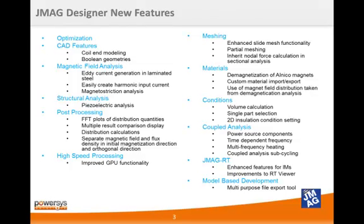For materials, JMeg has improved the database by adding the demagnetization characteristics of Alnico magnets, made it easier to import and export custom materials, and you can now apply magnetic material properties based on a demagnetization analysis. Setting your analysis conditions is also easier thanks to a volume calculation tool. You can also select single parts and apply an insulation condition in 2D models. When running a coupled analysis, JMeg version 12 has added a power source in addition to the standard voltage and current sources. You can also change the analysis frequency as a function of analysis time and use multiple frequencies in thermal heating problems. We also added a sub-cycling tool when coupling multiple analyses with dramatically different time constants.